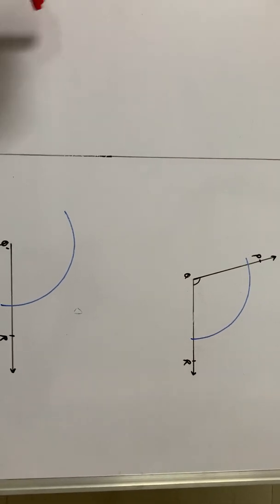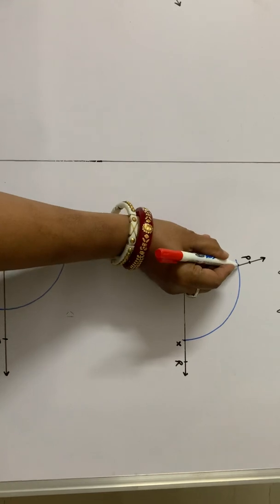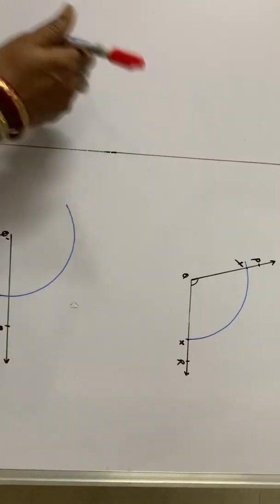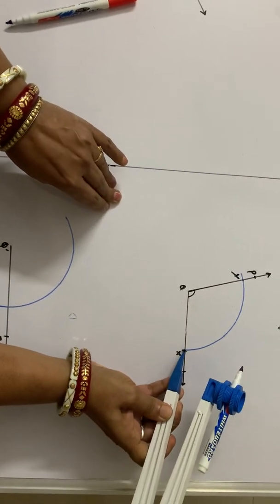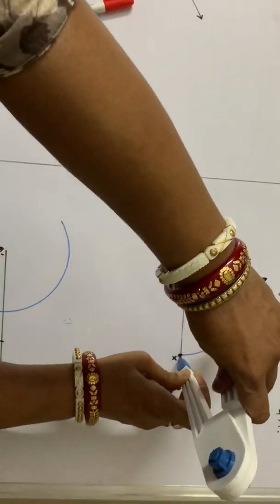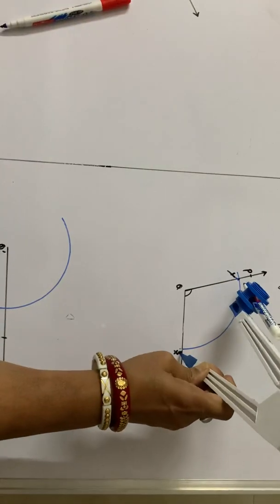Now, again this arc cuts the angle at two points, say X and Y. With the help of the compass, we will measure the distance X, Y. So, pointer at X, pencil at Y. This distance we will measure.